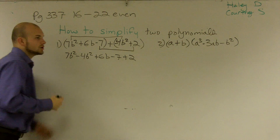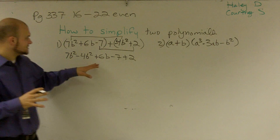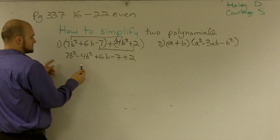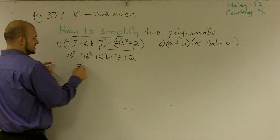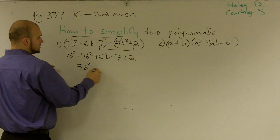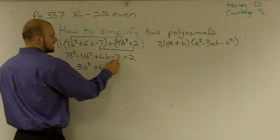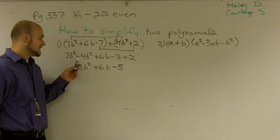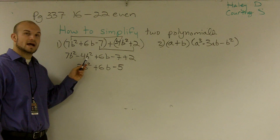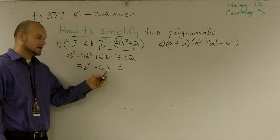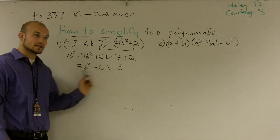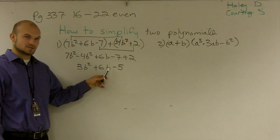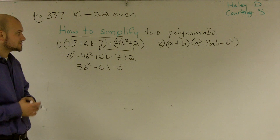Now that I've grouped the terms so they're next to each other, it's very easy to see my math. 7 minus 4 gives us 3b squared, plus 6b, and negative 7 plus 2 is negative 5. Take note: you cannot combine b squared and b to the exponent of 1 — they're not like terms — just the same as you cannot combine 5 and 6b. So that is the simplified version.